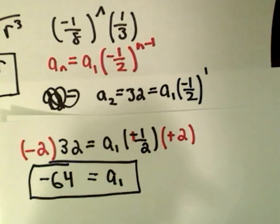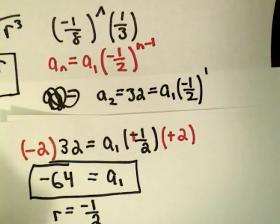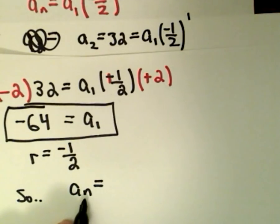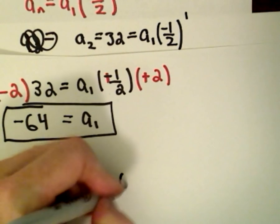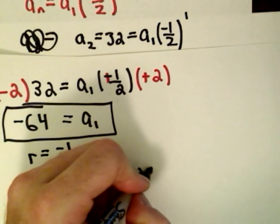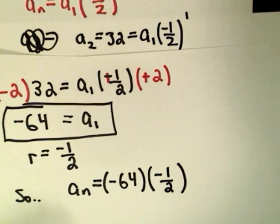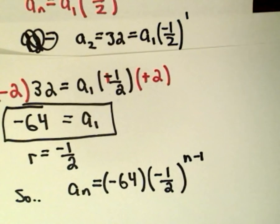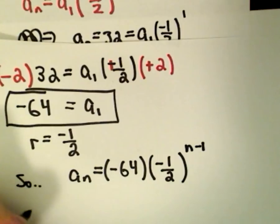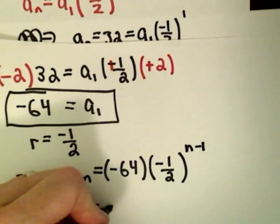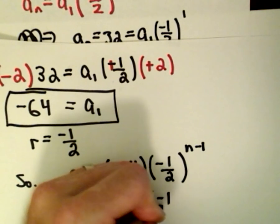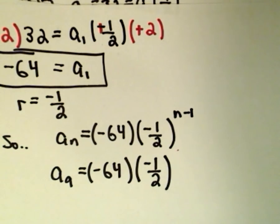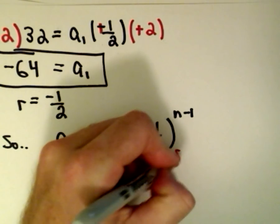We've got our first term and our r value. So the general formula is: a sub n equals negative 64 multiplied by negative 1 half raised to the n minus 1 power. For a sub 9, that means negative 64 times negative 1 half raised to the power of 9 minus 1, which gives us an exponent of 8.